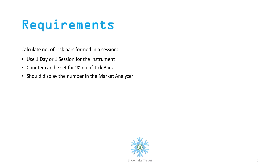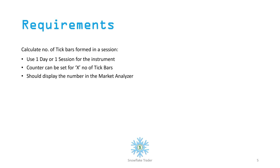Let's hash out the requirements used to calculate tick bars from the last session. We use one day or one session per instrument. We have a counter set for X number of tick bars, and that number should be configurable — so you can count 100-tick bars, 1,000-tick bars, or 2,000-tick bars depending on the pool of instruments you're working with. Bigger market cap stocks may have a higher number of tick bars within a trading session.